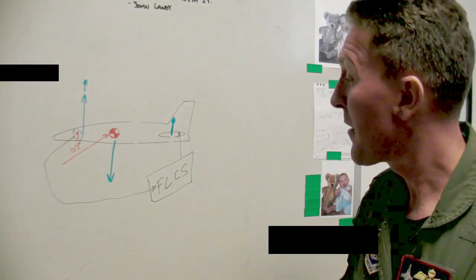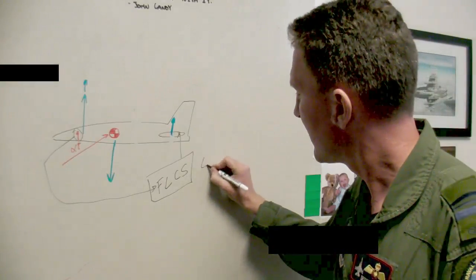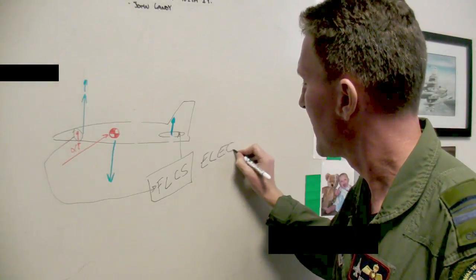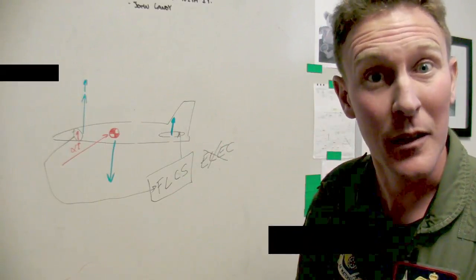The problem with a situation like this is, like with any computer, it needs electricity to operate. If you don't have electricity, the computer doesn't work and the airplane can tumble out of control.